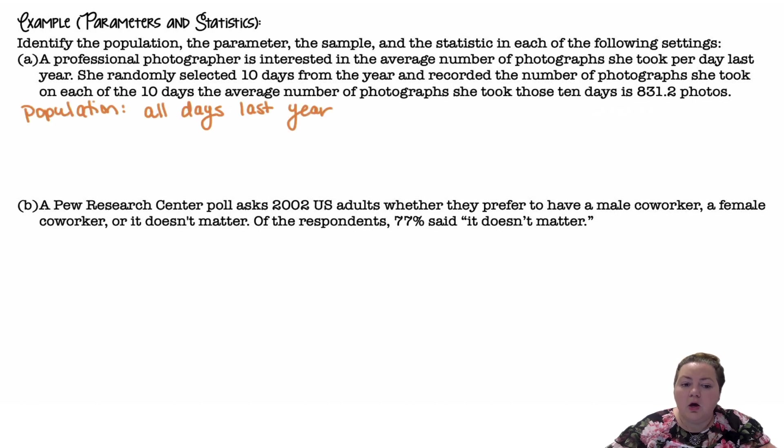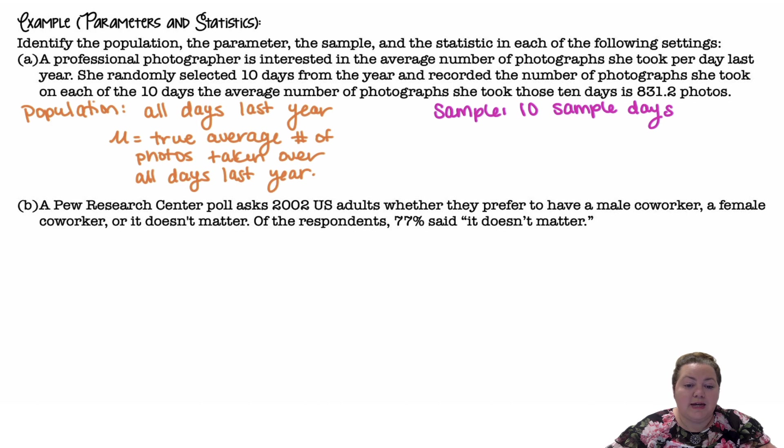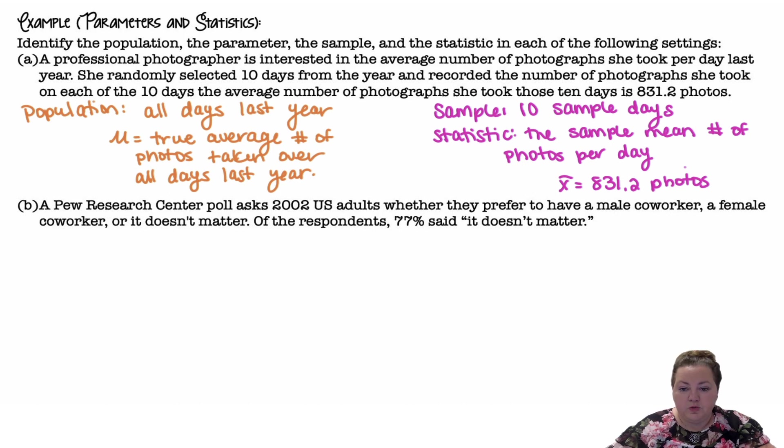So my population would be all days last year. μ would be the true average number of photos taken over all days last year. The sample would be the 10 sample days. We sampled 10 days, and then we looked at the thing we were measuring with our statistic, the sample mean number of photos per day, which was x̄ = 831.2.